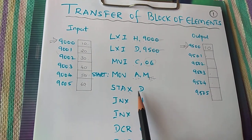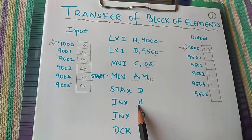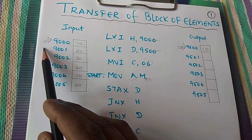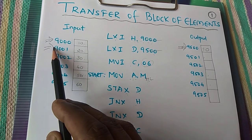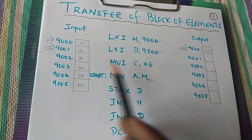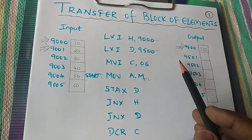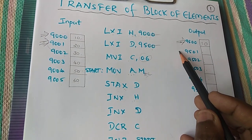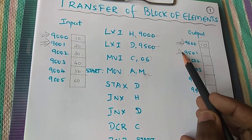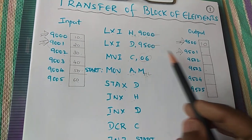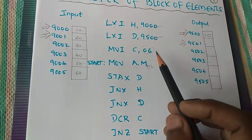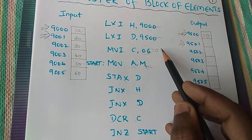Then INX H. That is, HL pair will be incremented from 9000 to 9001. Now the pointer will be pointing to this location. Then INX D means what? DE pair will be incremented by 1, that is 9501. DCR C. C contains 06, now it becomes 05. So C will be decremented.